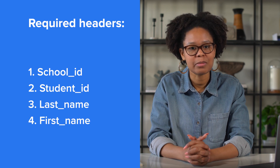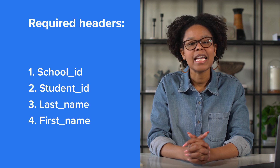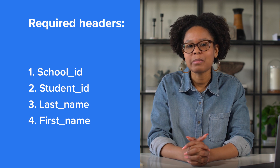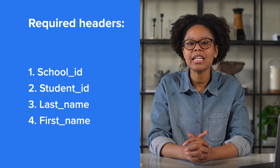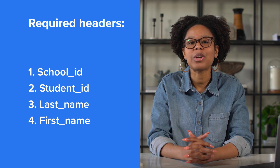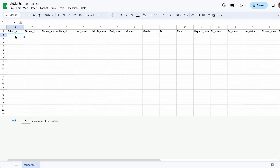This file has four required headers, or columns, to be uploaded. Keep in mind, you might have some additional required headers depending on the apps you plan to connect with Clever, and you can always add headers as needed.